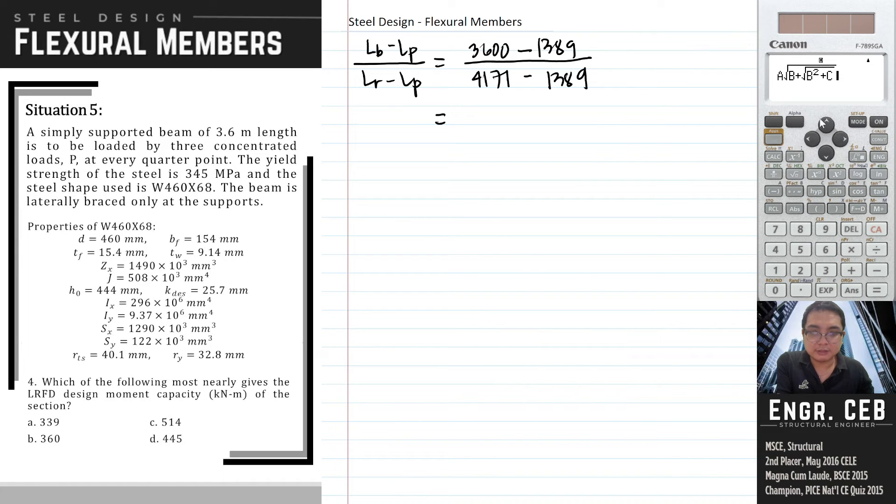Next, we calculate the ratio of the lengths: Lb minus Lp over Lr minus Lp. Lb is 3600, Lp is 1389, Lr is 4171. We should use the values with complete decimal values. So this ratio is 0.794574635.